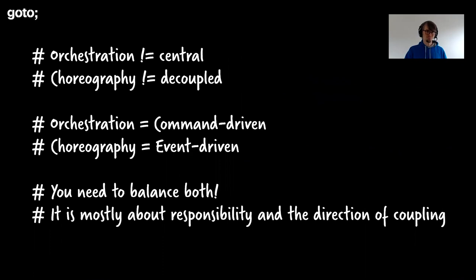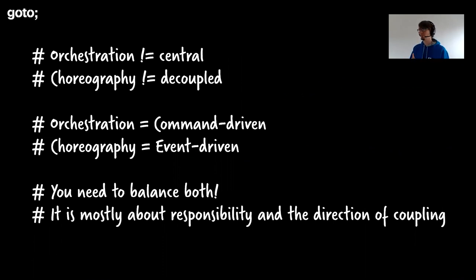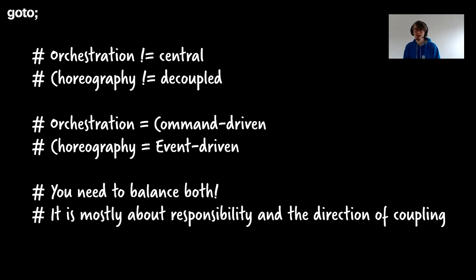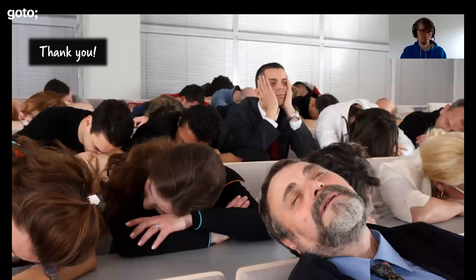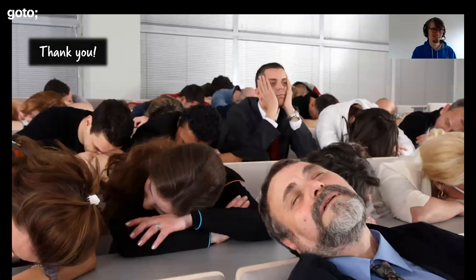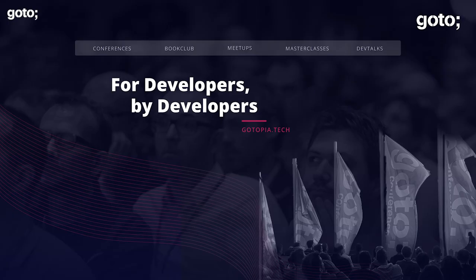Quick summary: orchestration is not central, choreography is not decoupled. For me, orchestration is command-driven and choreography is event-driven. Both involve coupling — it's about the direction of dependency and responsibility. You need to decide on a case-by-case basis for each communication link, which means thinking about it more carefully. You will have both communication styles in a good architecture.